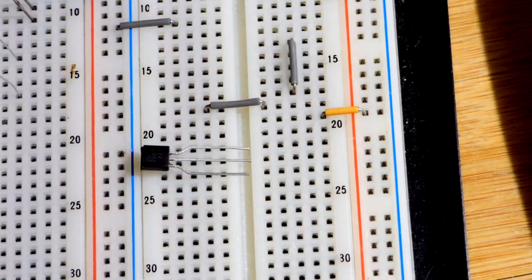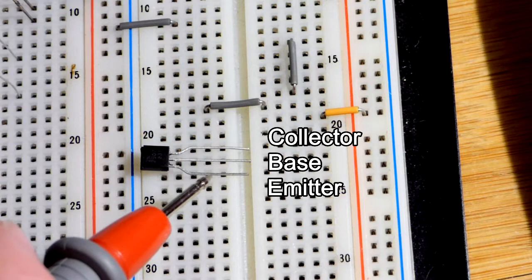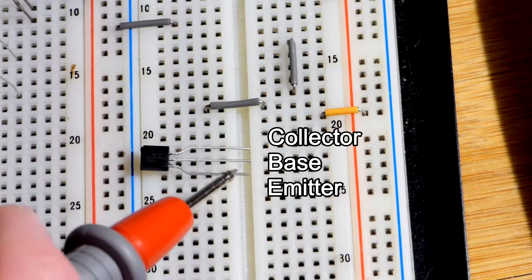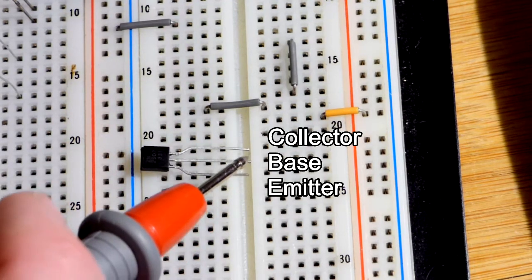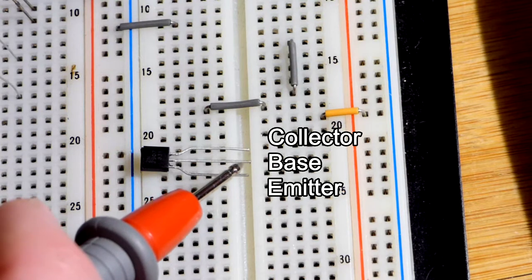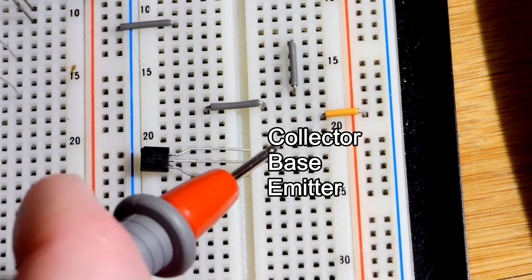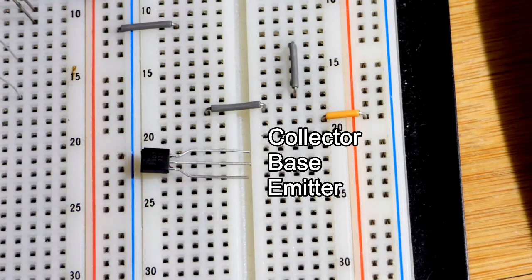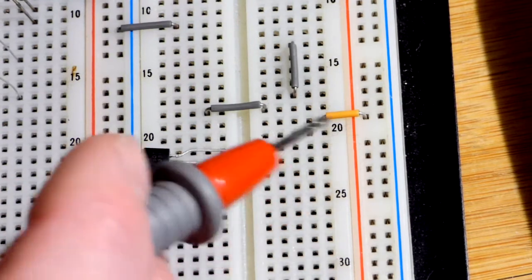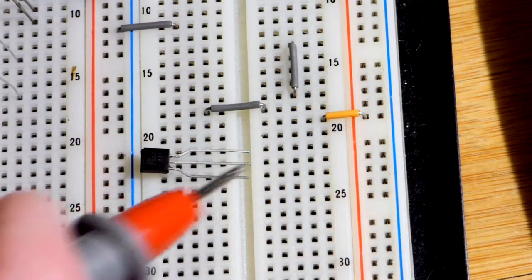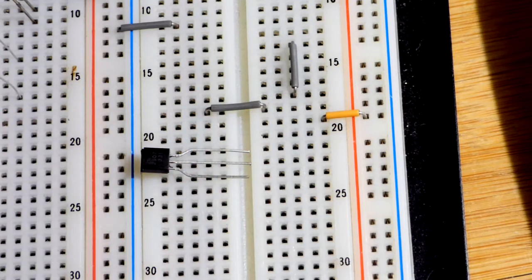So we're going to use it more in this direction. So now flat side still facing us, bottom pin is the emitter, the middle pin is the base, and the top pin is the collector.